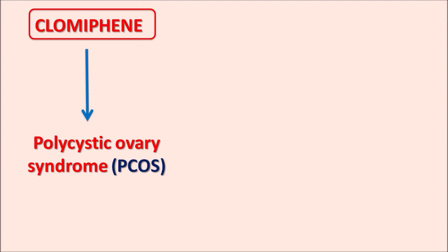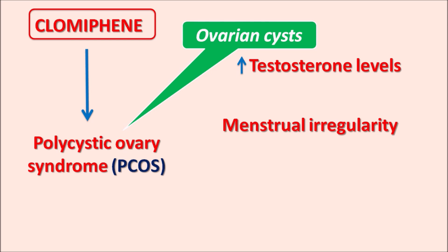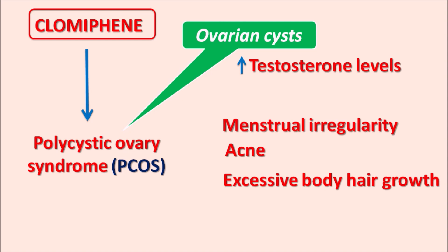Clomiphene is used to induce ovulation in women with polycystic ovary syndrome (PCOS), a condition characterized by the formation of small follicular ovarian cysts that reduce ovulation and cause menstrual disturbances. This syndrome is also associated with increased testosterone levels in women, producing symptoms such as menstrual irregularity, acne, excessive body hair growth, and infertility due to lack of ovulation.